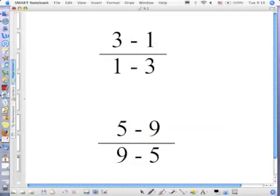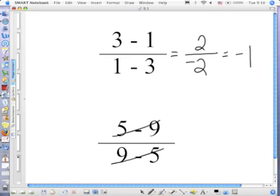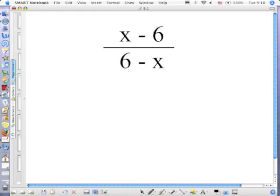Find the answer to that first one. It's negative one. It's still basically the same thing except it's not positive now because 2 over negative 2 reduces to what? Negative 1. So 5 minus 9 over 9 minus 5 reduces to negative 1, which means if there is a variable involved can you cross that out? So let's apply that.